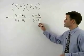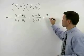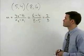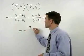6 minus 4 over 8 minus 5 simplifies to 2 over 3. So the slope of this line is 2/3.